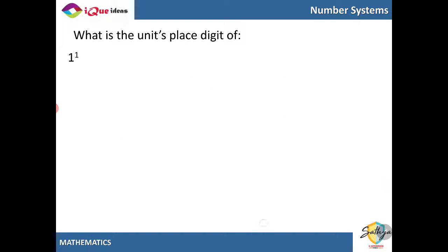Now what is the units place digit of 1 raised to 1? We can see that here it is 1. For 1 raised to 2 again it is equal to 1. So if you take any power of 1 or a number ending in 1, you will quickly identify that the units place digit always ends in 1.